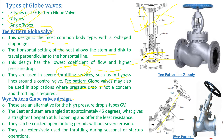Next is the Y-type pattern globe valve. As the name suggests, the body of this valve looks like the letter Y. These are an alternative for high pressure drop applications compared to the Z-type globe. In this design there is no three to four directional change — only minimal change in flow direction, so pressure drops are less compared to the Z-type globe.